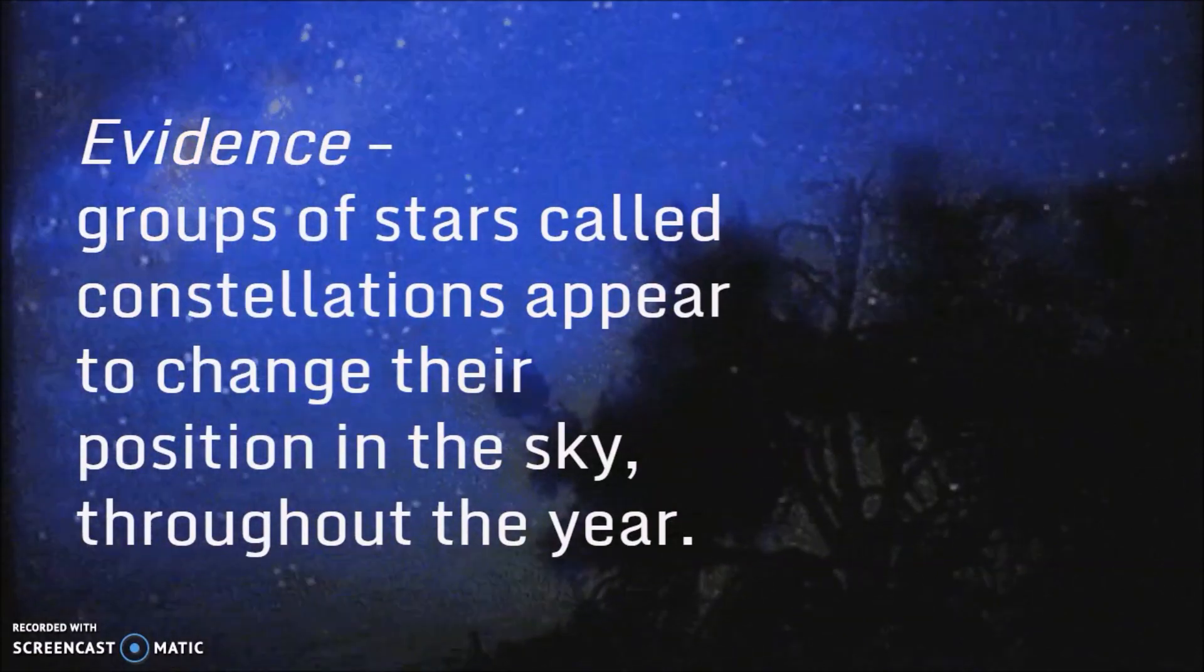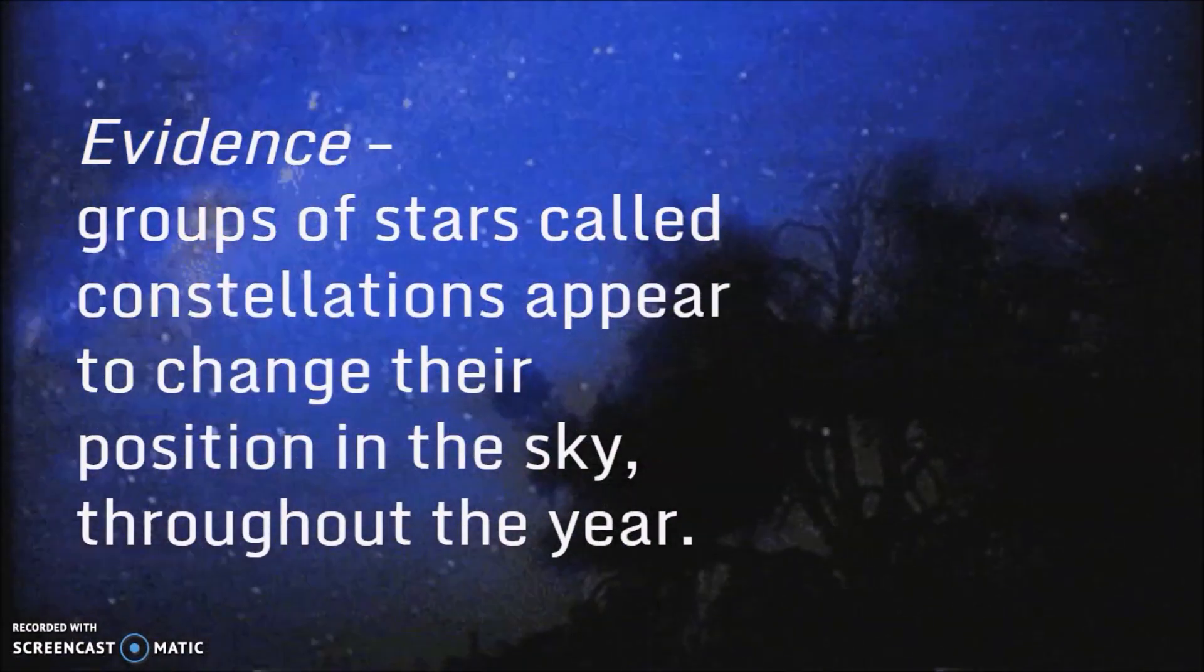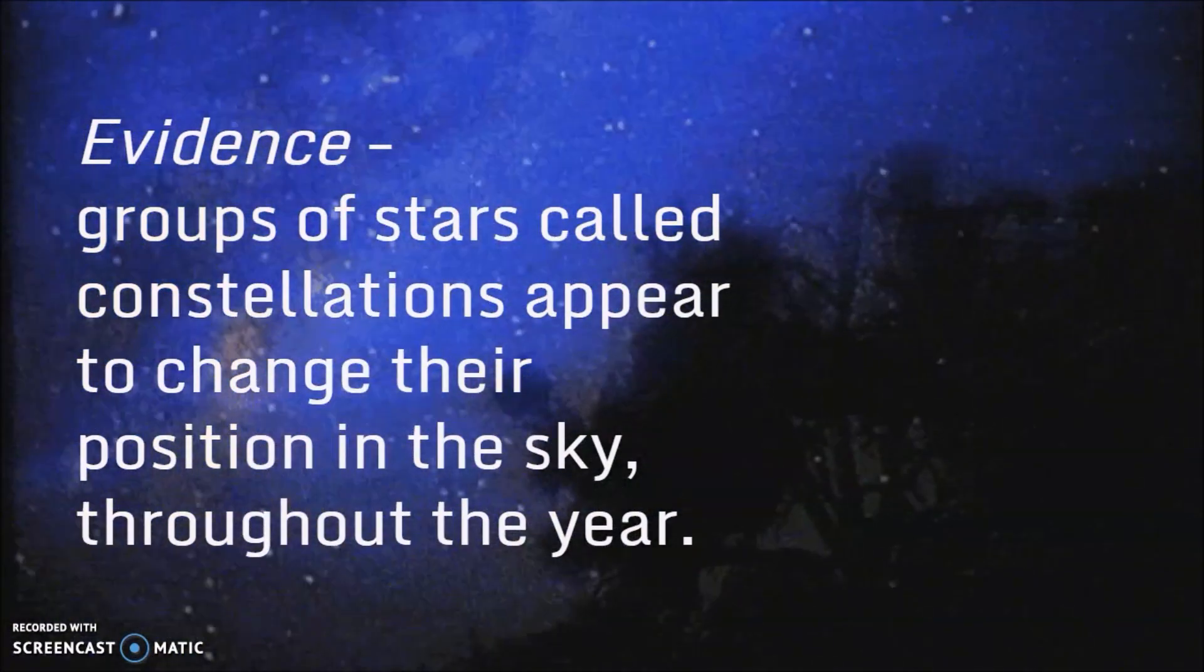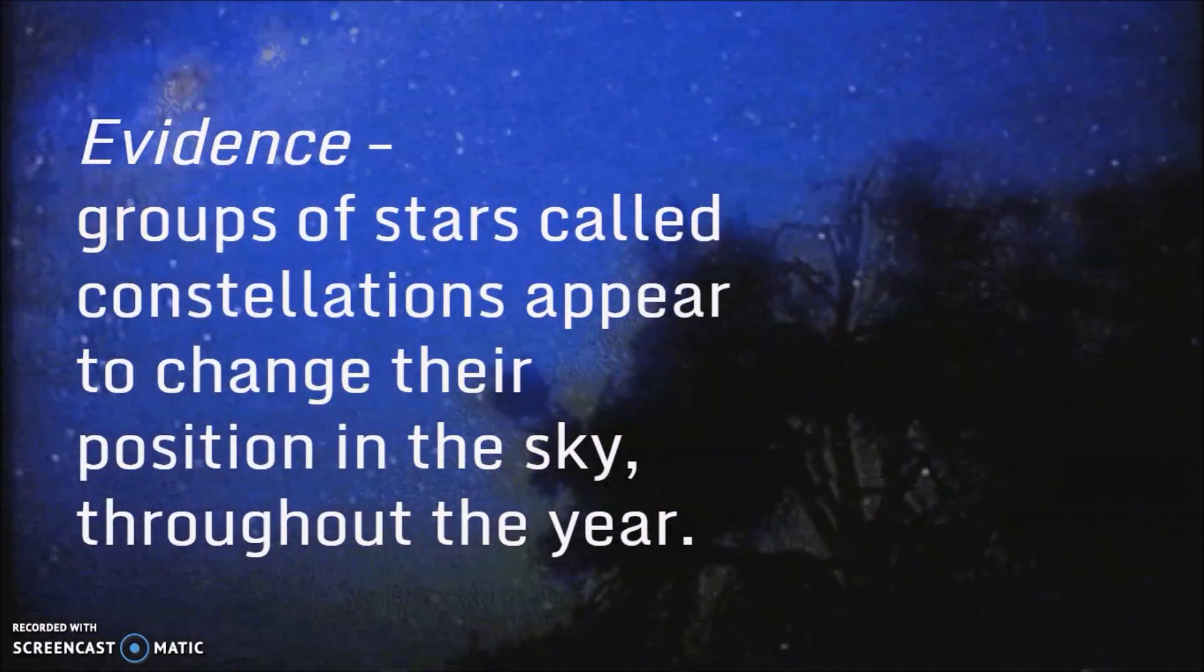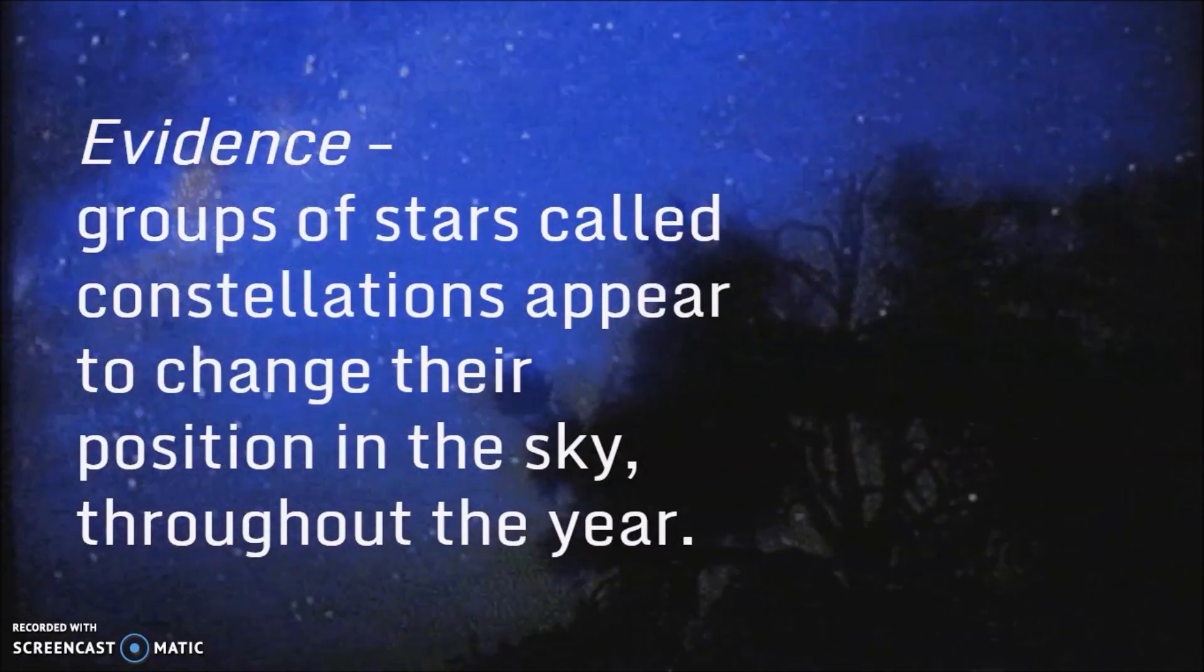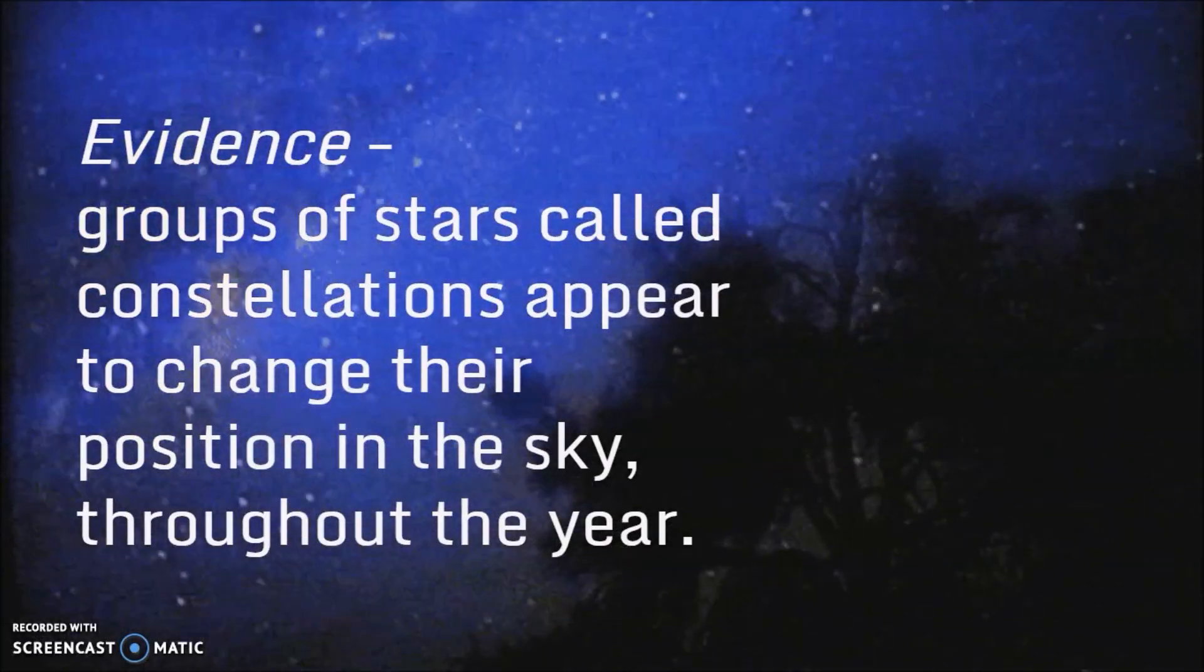Evidence that Earth is revolving is that groups of stars, called constellations, will appear to change their position in the sky throughout the year, or sometimes not be visible at all. This is because Earth's position in space is going to change.